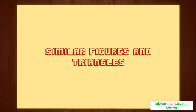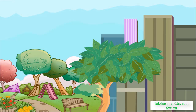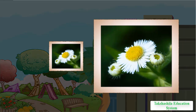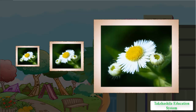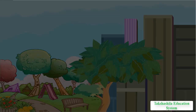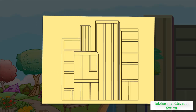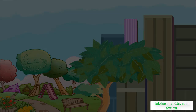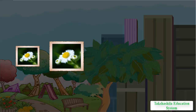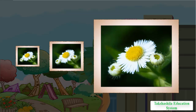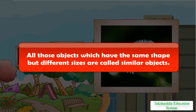In this module, we will learn about similar figures and triangles. Looking around, we see many objects which are of the same shape but of same or different sizes. For example, leaves of a tree have almost the same shape but same or different sizes. Similarly, photographs of different sizes developed from the same negative are of same shape but different sizes. The model of a building and the building itself are of same shape but different sizes. All those objects which have the same shape but different sizes are called similar objects.